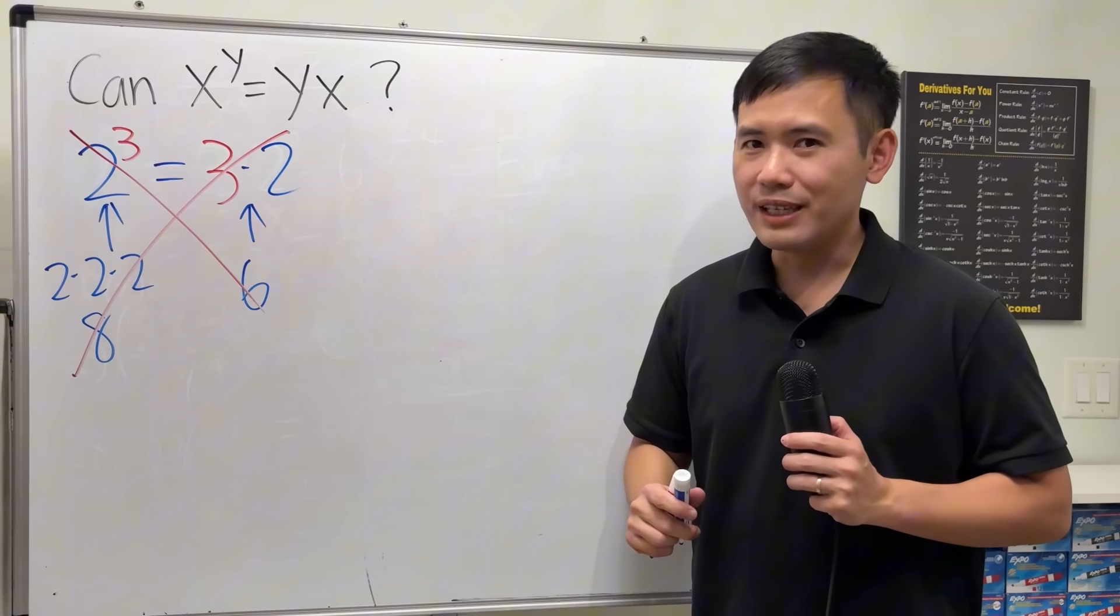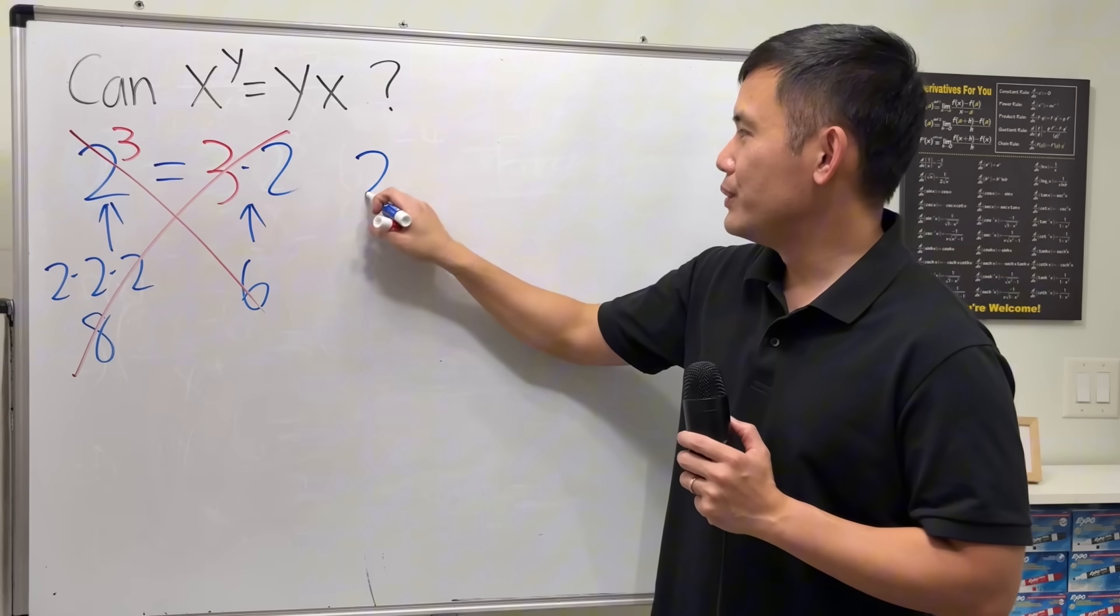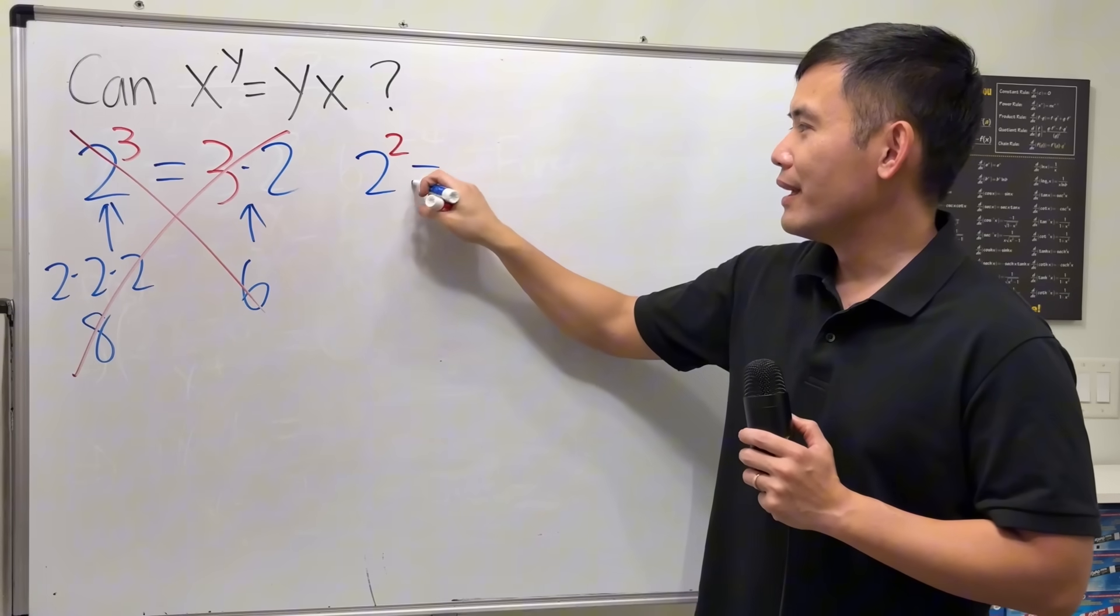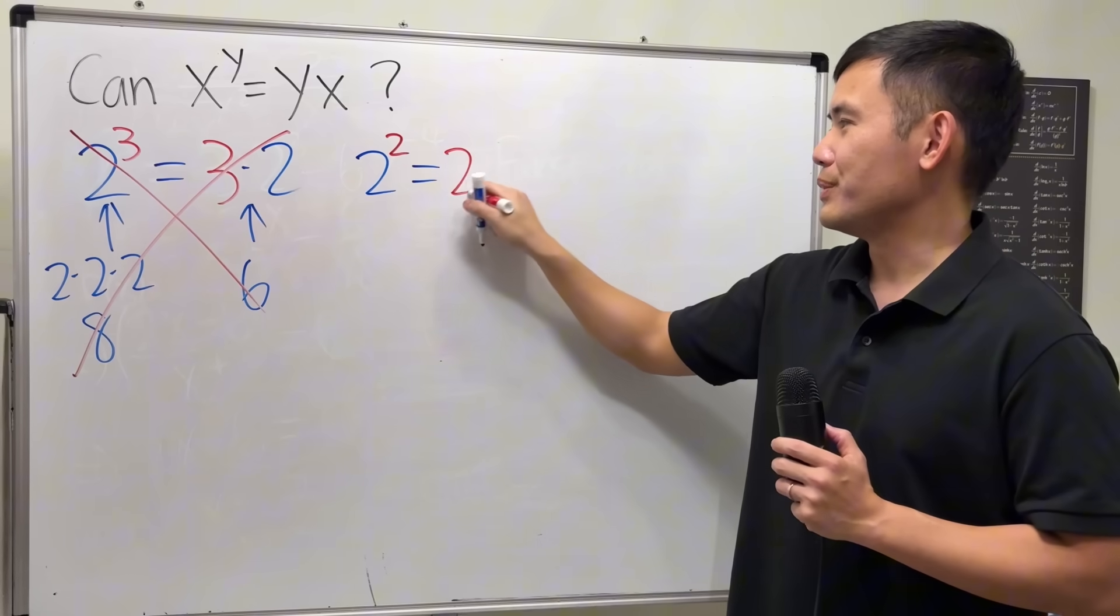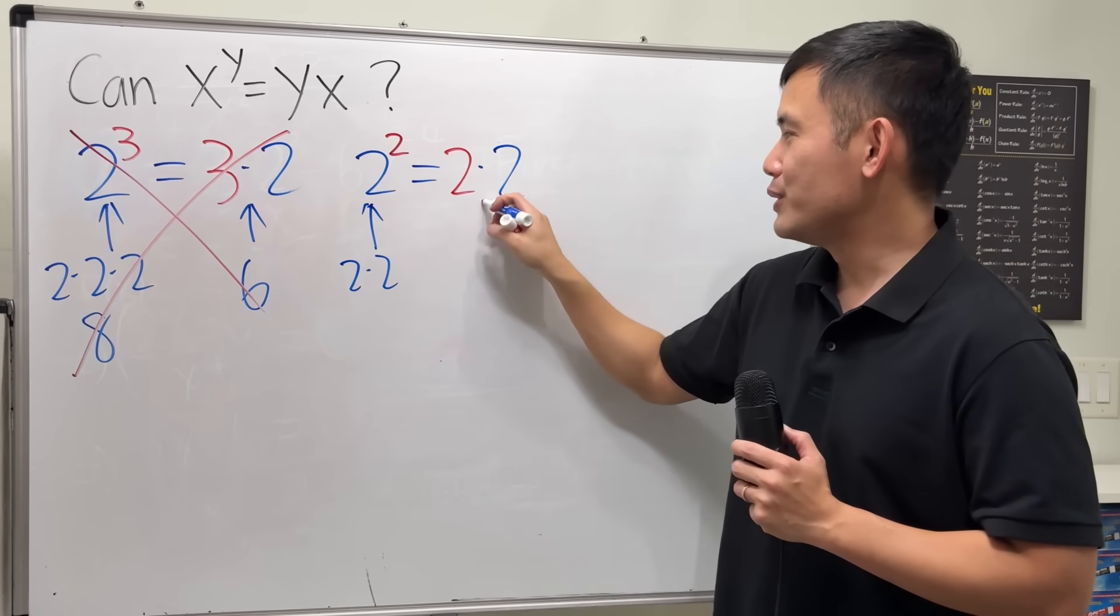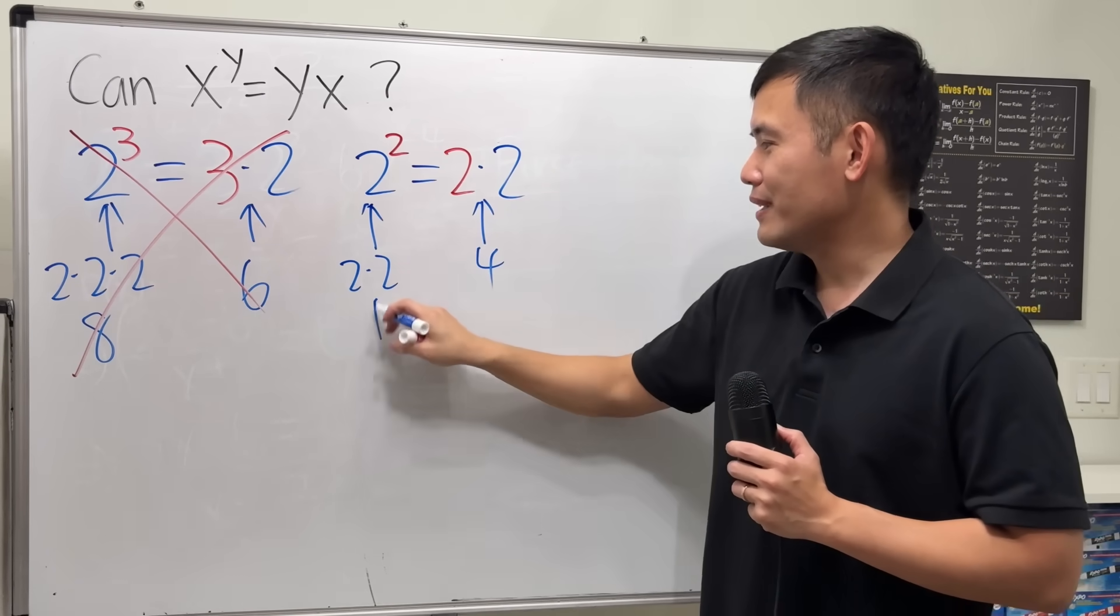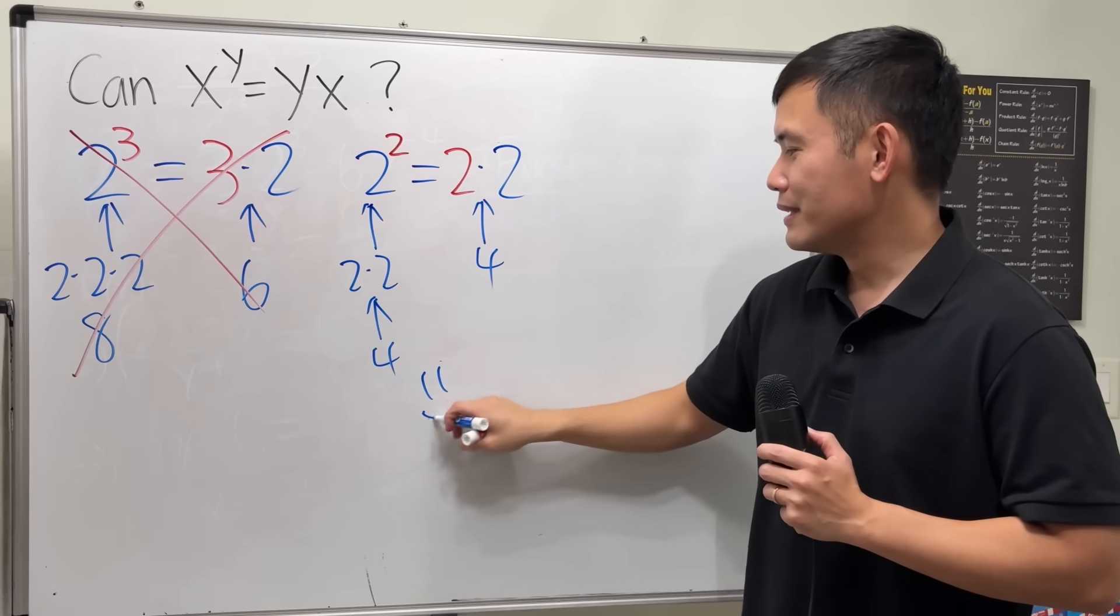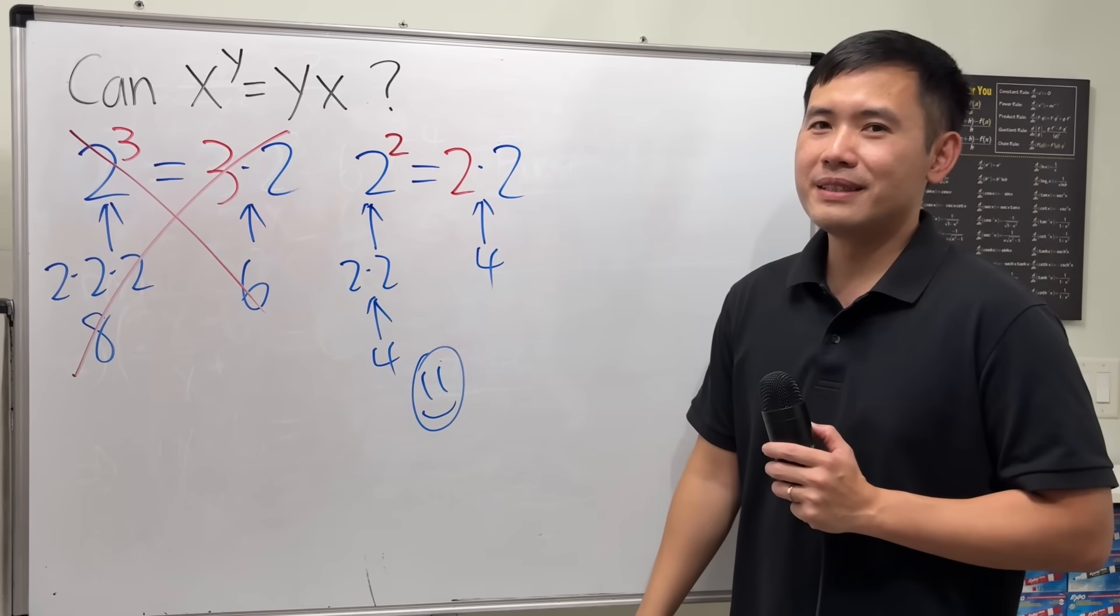But I know you guys know this as well. If we have 2 to the second power, that happens to be the same as 2 times 2, because this means 2 times 2, which is of course the same as that. That's 4, and this is 4, and now, I know, happy, right?